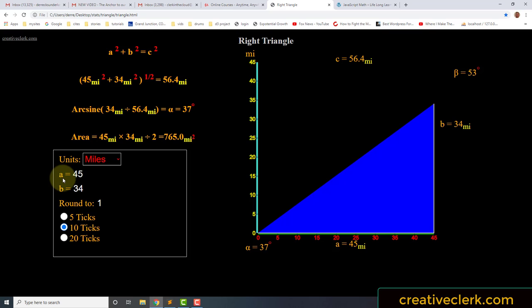But in this application, we start with knowing what they call the knowns, which is A, the base, and then B, the height of the triangle.